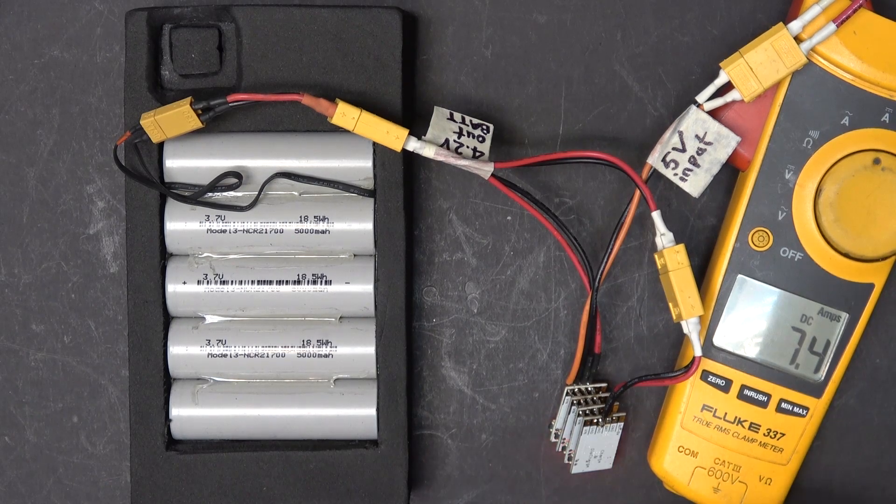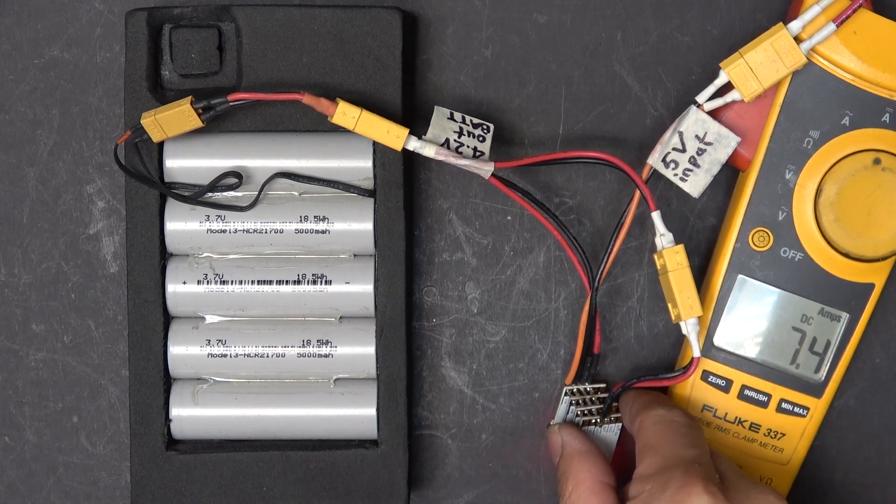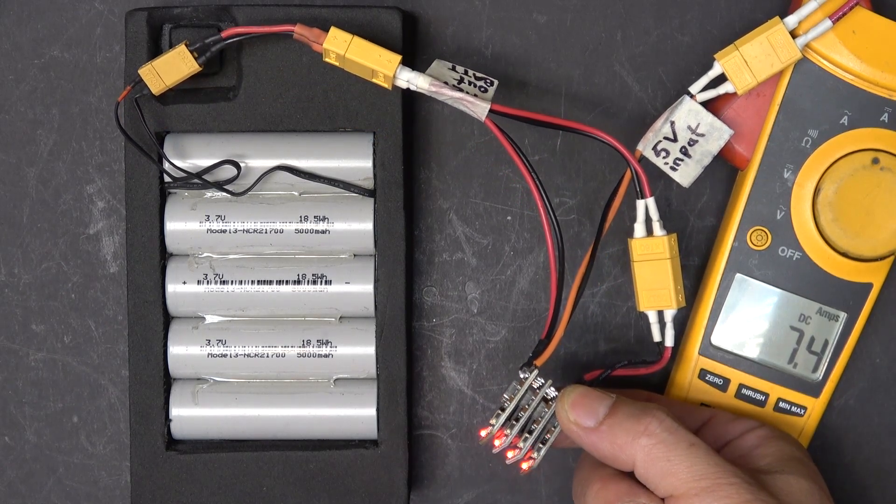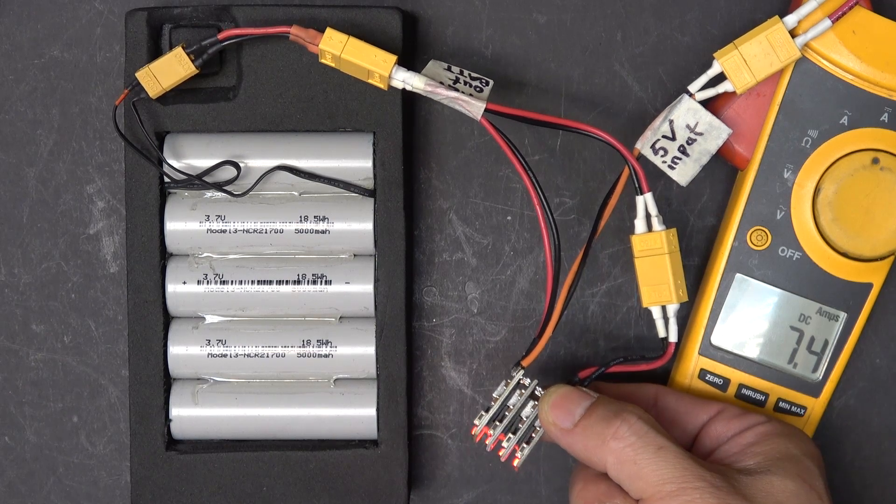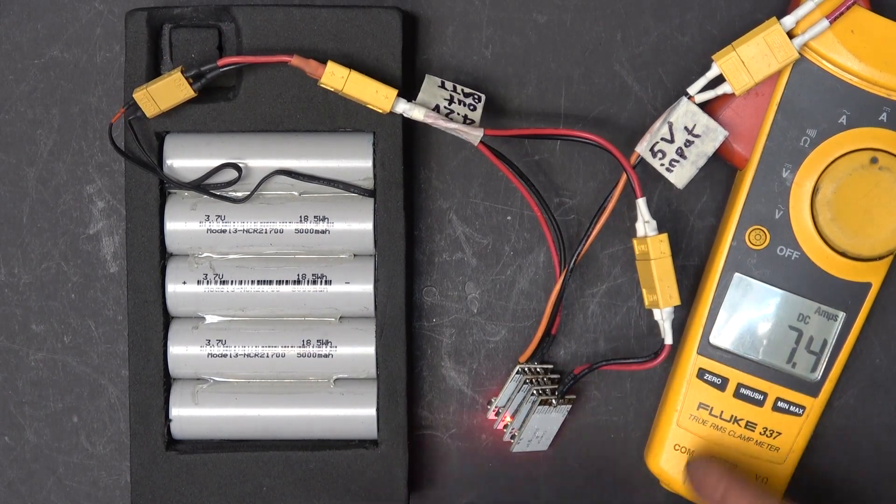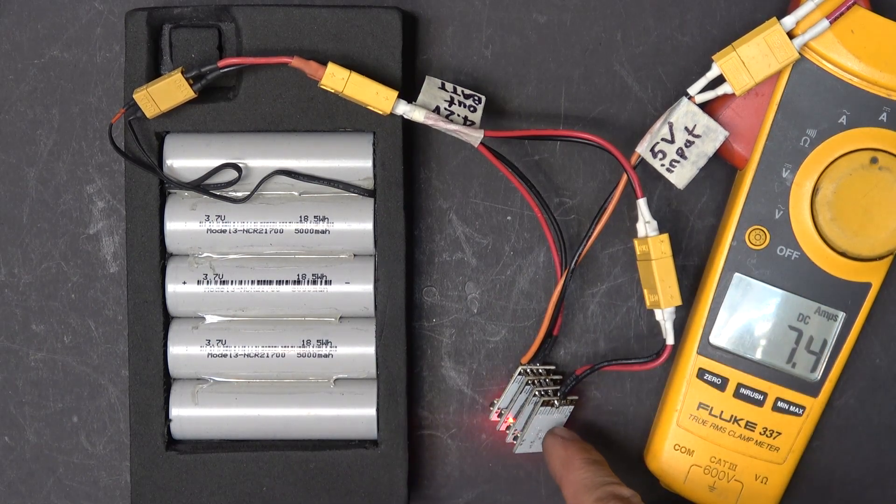The lights are blinking down here. Let me turn it over so you can see the lights blinking. All blinking. So that means they are all charging at the same time in parallel. Now if I disconnect this, it's going to disconnect the last board.